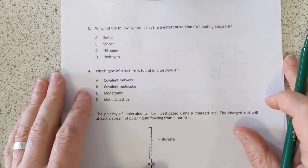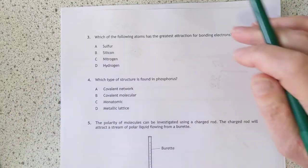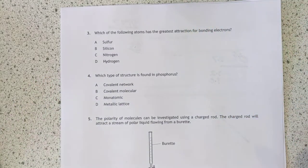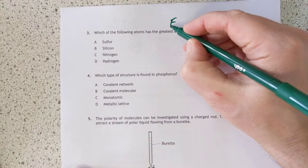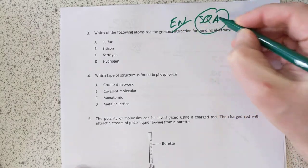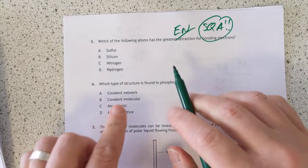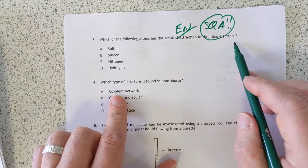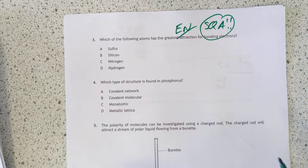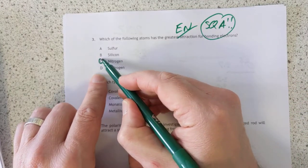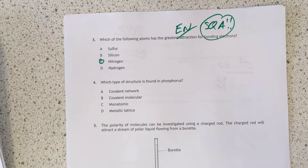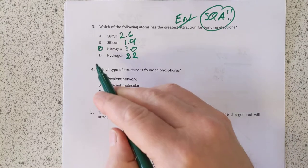Number three. Which of the following atoms has the greatest attraction for bonding electrons? Another electronegativity question. That's not very original SQA. I'm going to call you out on that one. In other words, this is the definition of electronegativity. I'm going to go with that one in gut value. Donkey work, SQA. Yep, I was right. It's nitrogen.